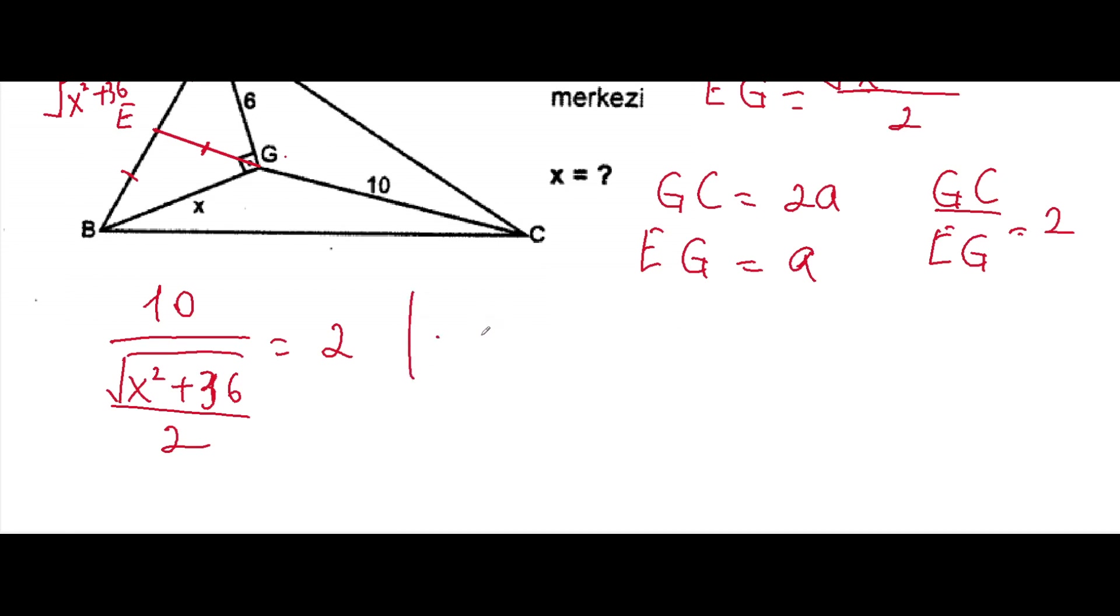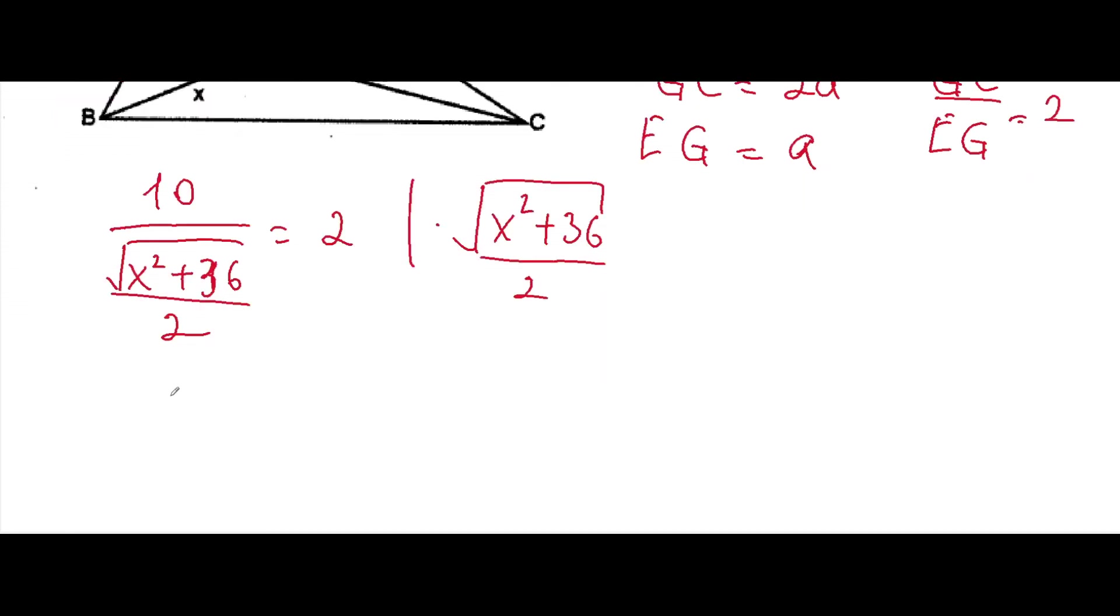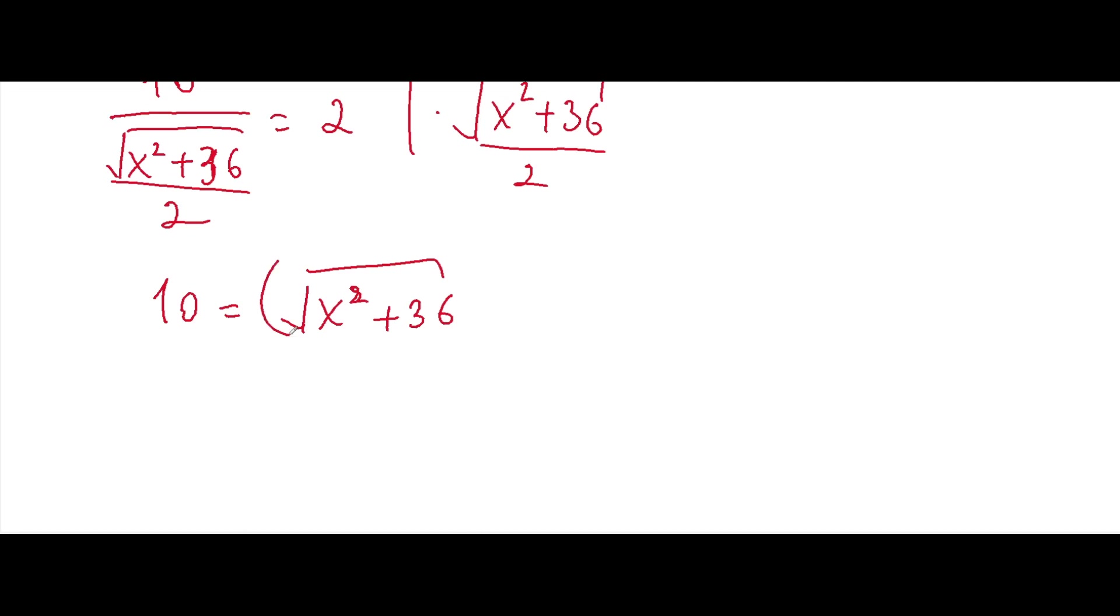And we can multiply both sides by square root of x squared plus 36 over 2, and we'll get here 10 will be equal to square root of x squared plus 36. We can square both sides.